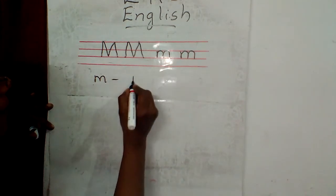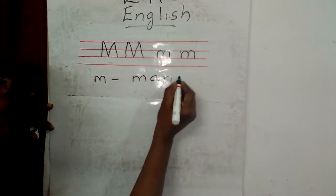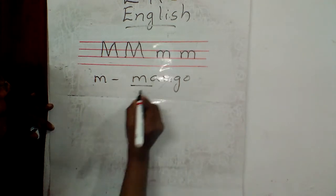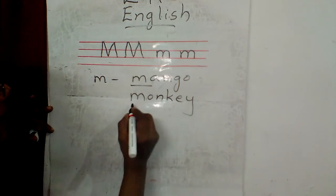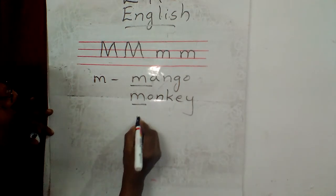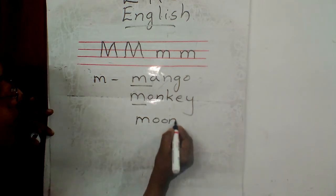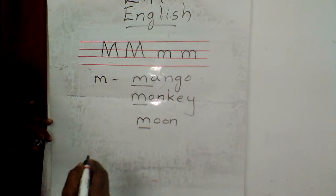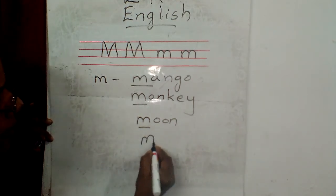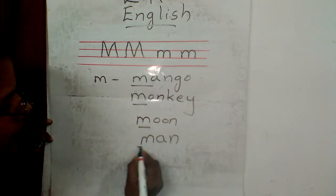M-A-N-G-O, mango, beginning with the letter M. Then monkey, M-O-N-K-E-Y, monkey, first letter M. Then moon, M-O-O-N, moon, beginning with M, first letter M. Then next one, man, M-A-N, man, beginning with the letter M.